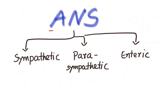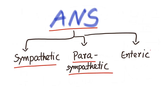The autonomic nervous system is divided into three main divisions: the sympathetic nervous system, the parasympathetic nervous system, and the enteric nervous system. Let us set aside the enteric nervous system and focus our discussion on the sympathetic and parasympathetic nervous system. Understanding the anatomy and physiology of these two systems is very crucial to ANS pharmacology, so we are going to go over this a few times until you have a solid understanding.